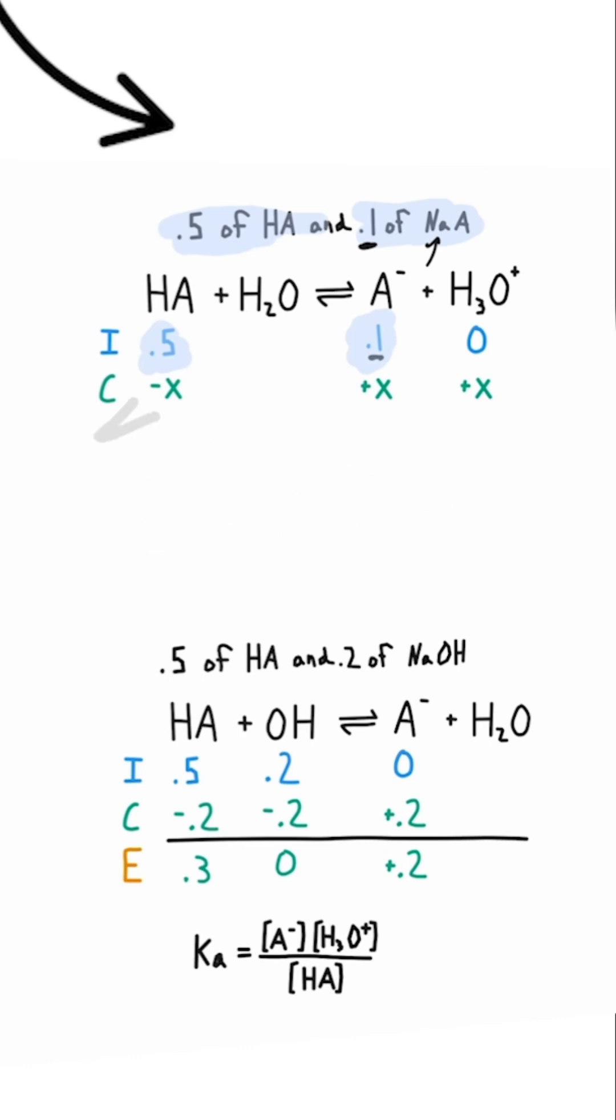Instead of doing anything else with the ICE table, write out the Henderson-Hasselbalch equation, and then plug in the value for 0.5 and 0.1 into the appropriate spots in the Henderson-Hasselbalch equation. You'll just have to also know what the pKa is for that weak acid.